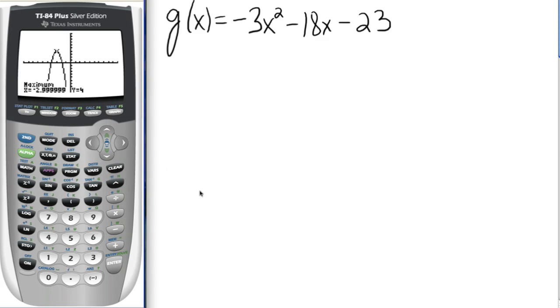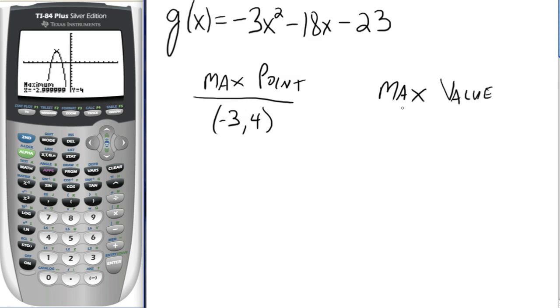So really, what do you think this is? That's really negative 3. So the max point, the maximum point here, is negative 3, comma 4. And the maximum value is just 4, the y part of the maximum point.